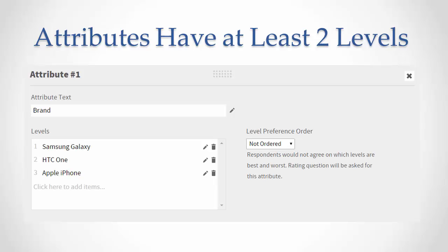Here's the Discover dialog for inputting attributes and levels. This attribute brand has three levels: Samsung Galaxy, HTC One, or Apple iPhone. Other attributes in your CBC study might have a different number of levels, such as two, four, or five levels. We don't know ahead of time which brand respondents would prefer, so this attribute has no logical preference order. We specify not ordered here for the level preference order.